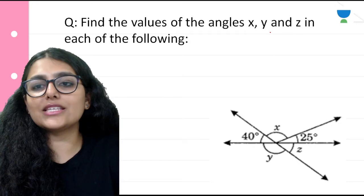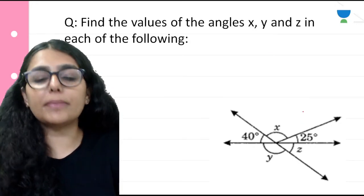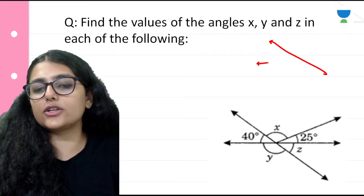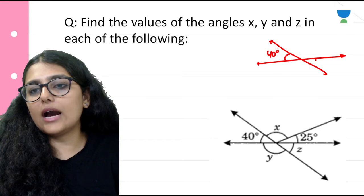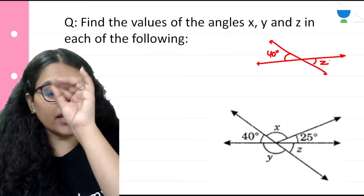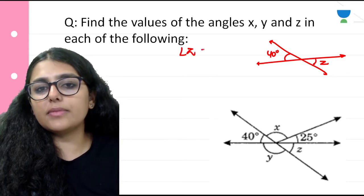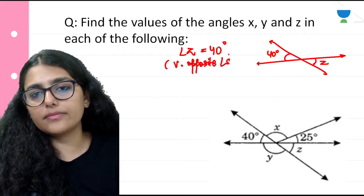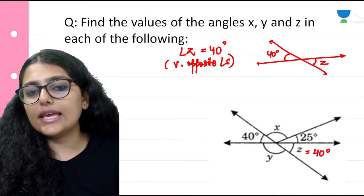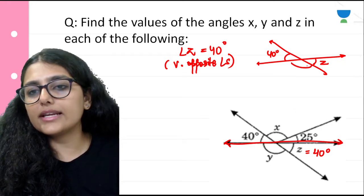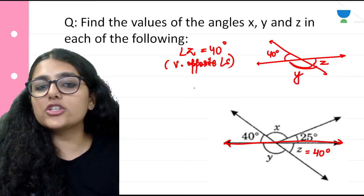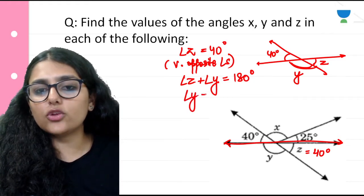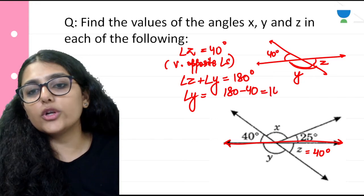Find the values of x, y, and z in the following. Two lines are intersecting. If this is 40 degrees and angle z is given, since these are vertically opposite angles, angle z equals 40 degrees. Then on the straight line, angle z plus angle y forms a linear pair, so their sum is 180 degrees. If z is 40, then angle y equals 180 minus 40, which equals 140 degrees.